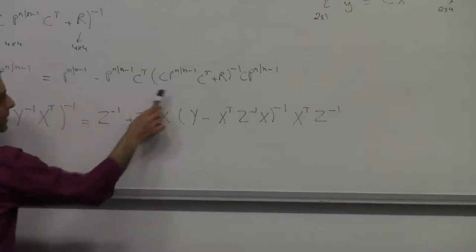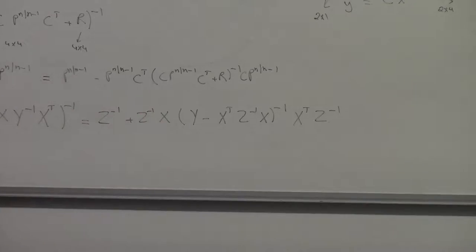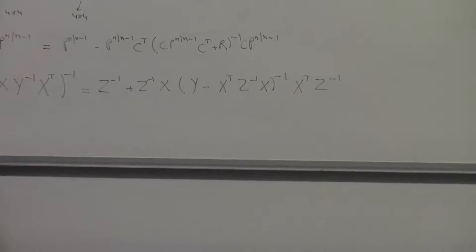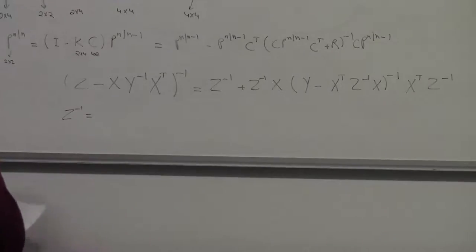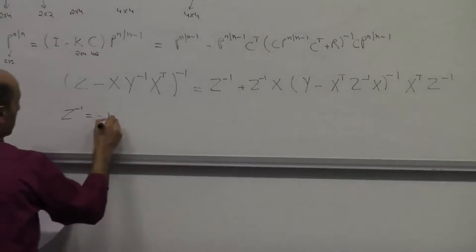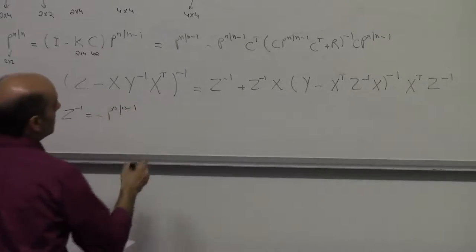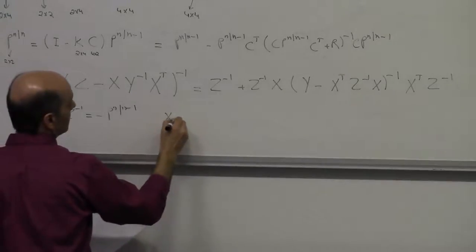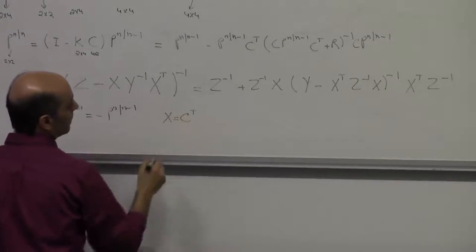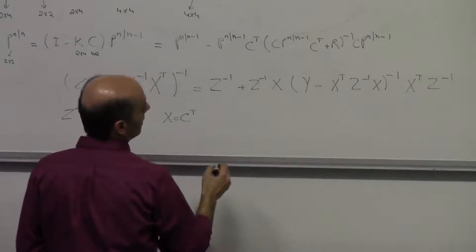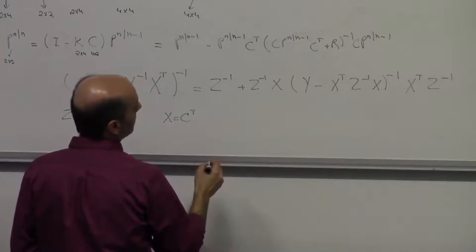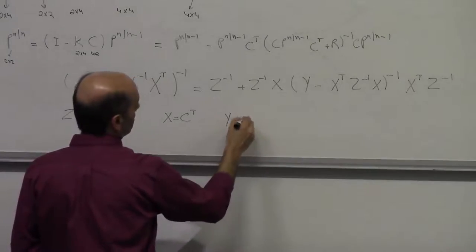Looking at this equation, I'm going to rewrite it as an inverse of something by setting Z^{-1} equal to my prior uncertainty P, X equal to C-transpose, and Y equal to R.